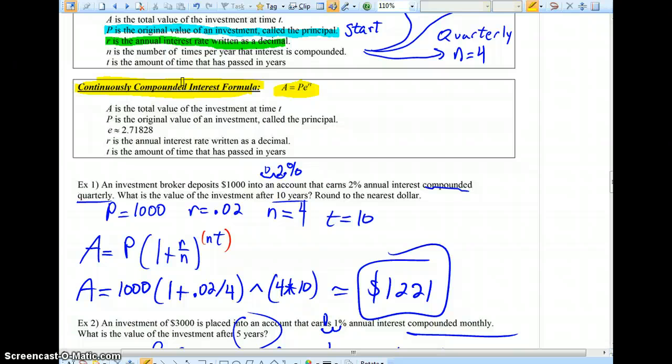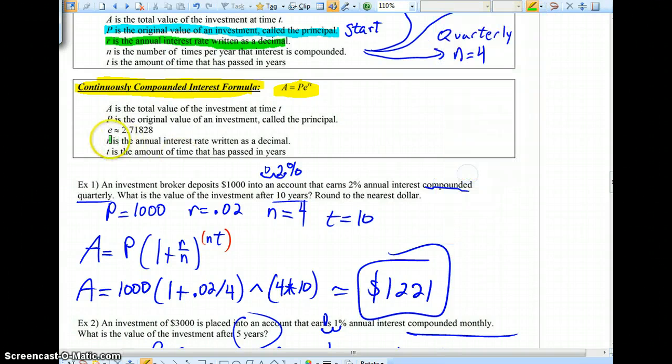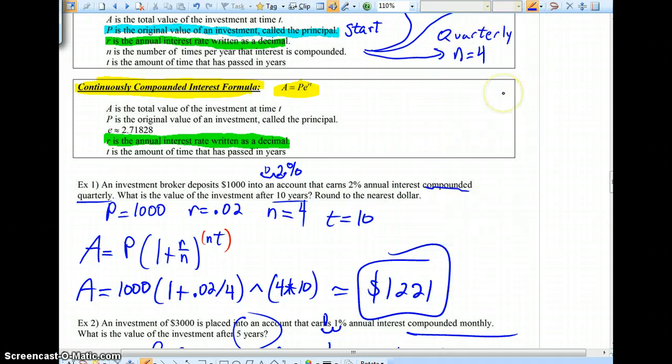P, again, is the original value, the principal, just like before. A is the total value of that investment at a certain time. R, once again, is your interest rate, annual interest rate, but here we go again, written as a decimal. T is the amount of time that's passed in years, but look at E.